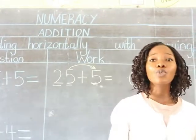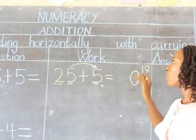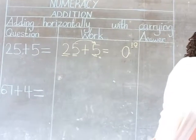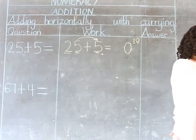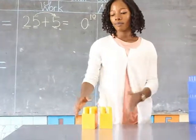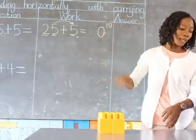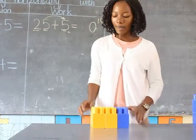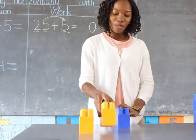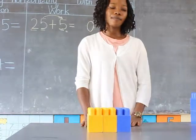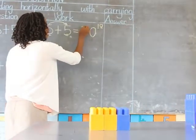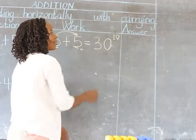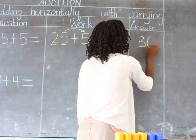In the tens position, we have 2, and there is no other tens digit in 5. So we have 2 and the carried 1 to add. I'm counting 2 building blocks then 1 building block: 1, 2, and 1. Putting them together: 1, 2, 3. So 2 plus 1 equals 3. I'm writing 3 in the tens position. The answer is 30.